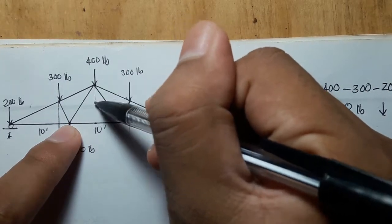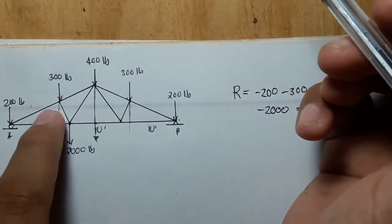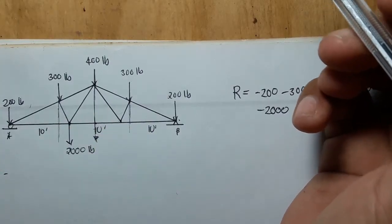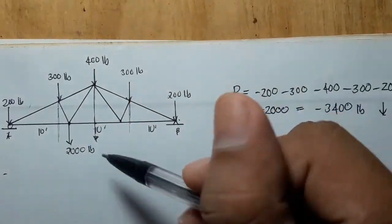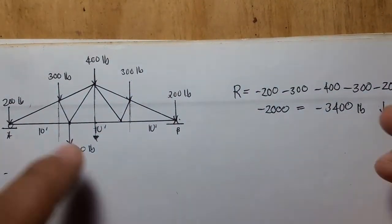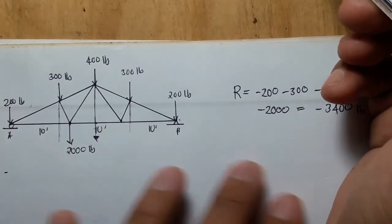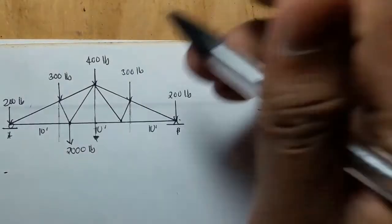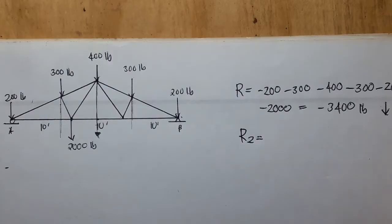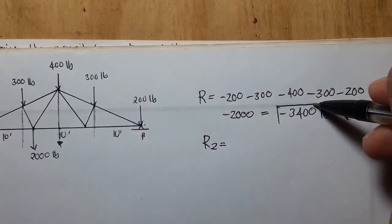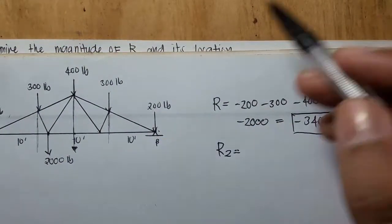Obviously the resultant of these five forces would fall in the middle, because as you can see this is what you call symmetrical. So the resultant of the five forces falls at 15 feet from both sides A and B. Remember, R2 is the resultant of just these five forces — it is the summation of these five forces.